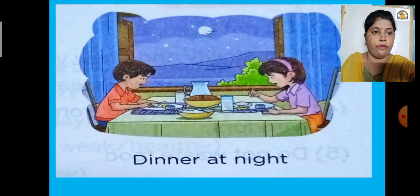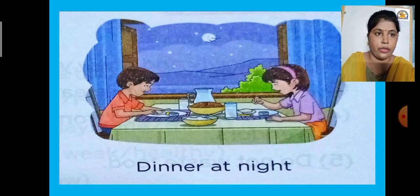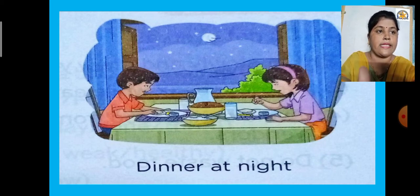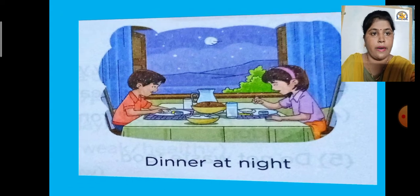Whatever meal we take at night is called dinner. In the picture you can see the moon and stars in the background, showing people having their dinner. So the meal taken at night is called dinner. I hope you now understand what breakfast, lunch, and dinner mean.